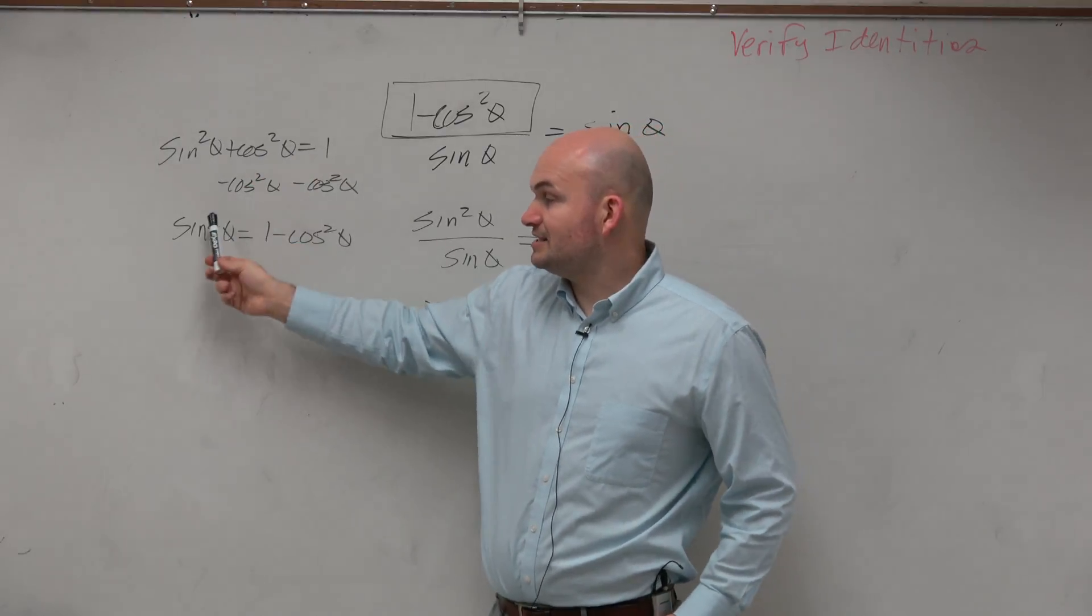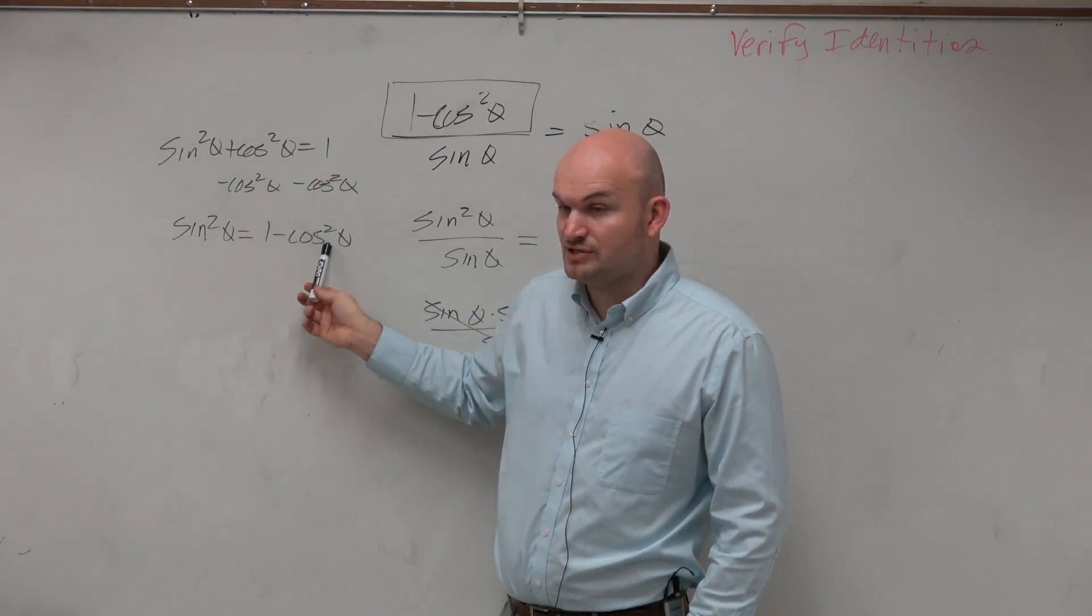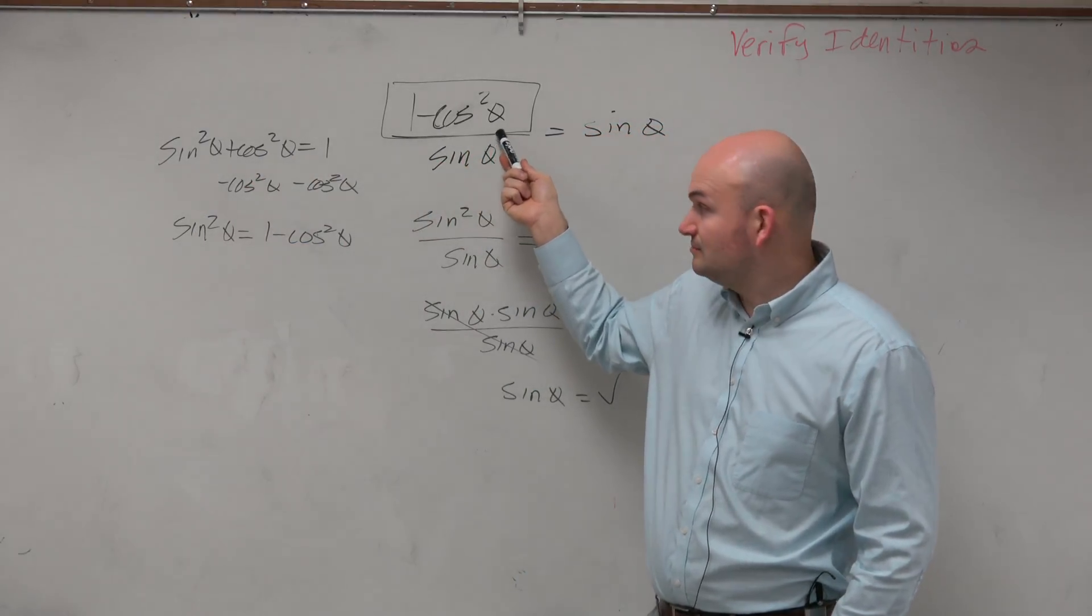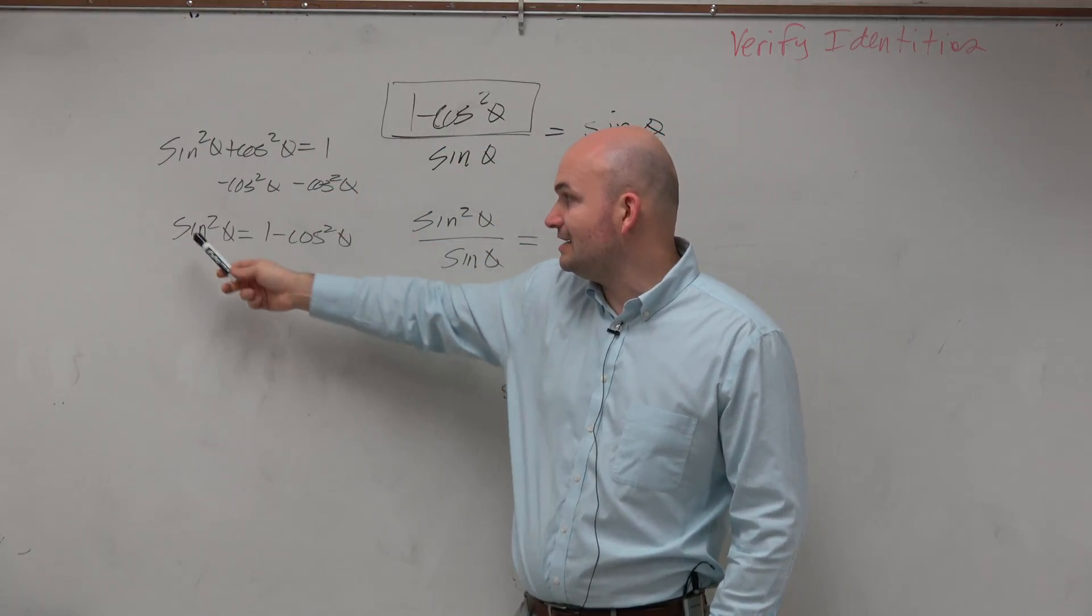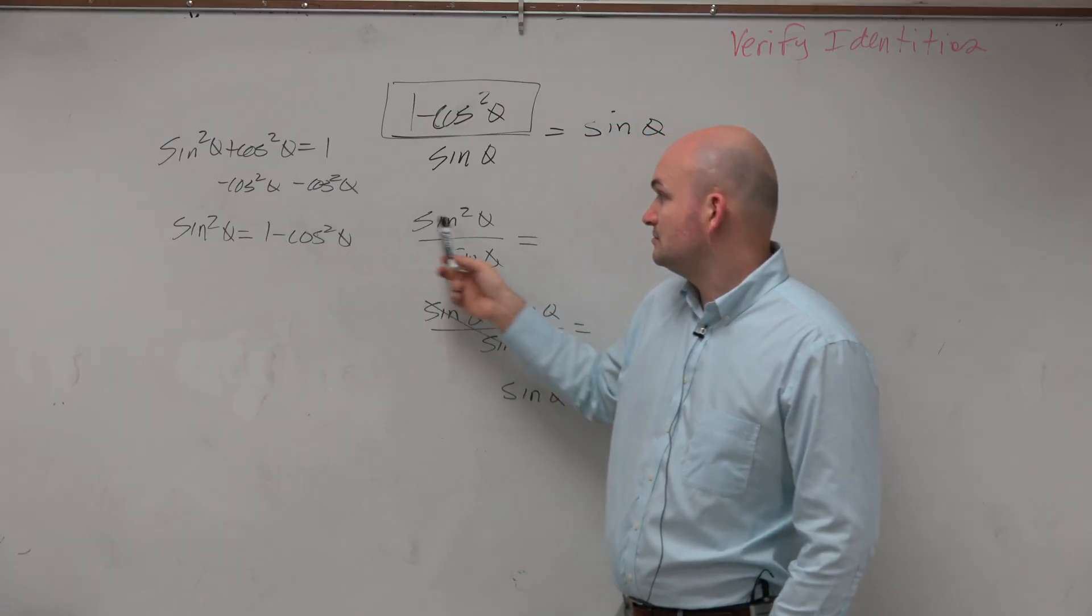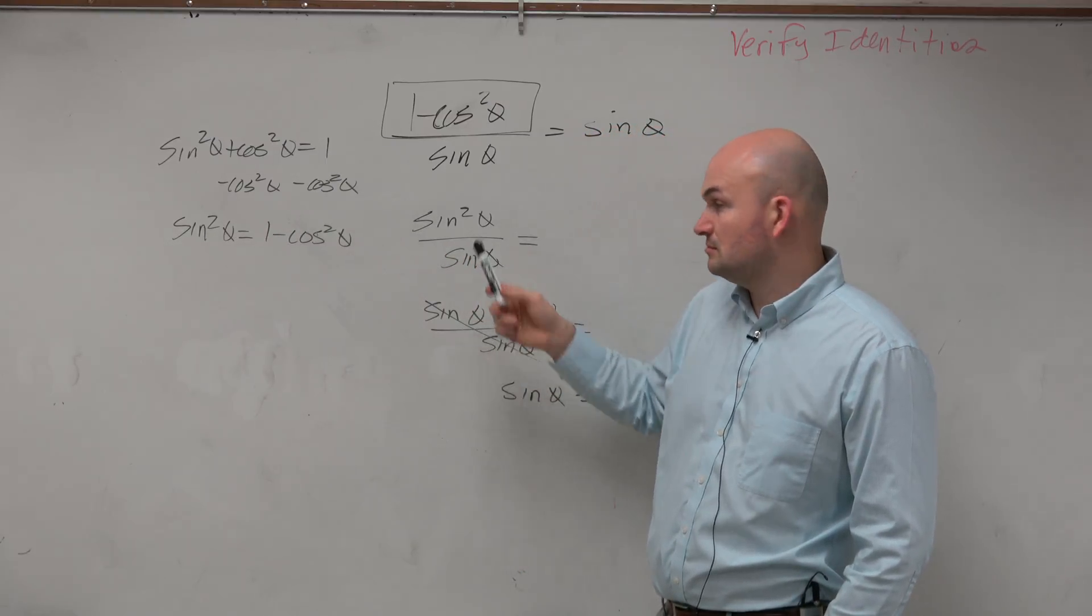So I just subtracted to get this sine squared equals 1 minus cosine squared. Well, that's the problem. Those are the same. So based on this identity, 1 minus cosine squared of theta equals sine squared of theta, OK?